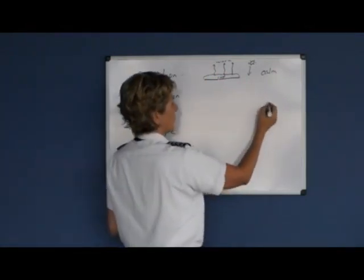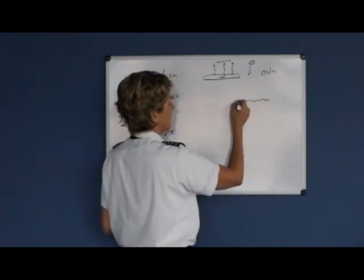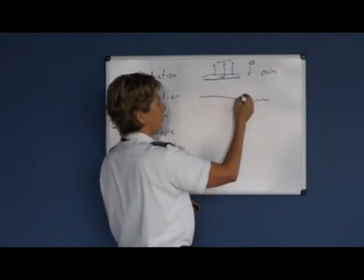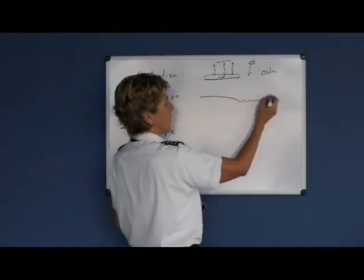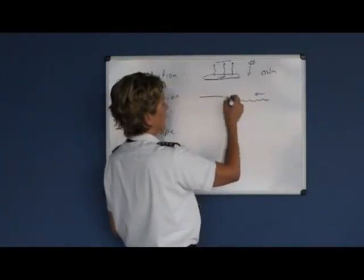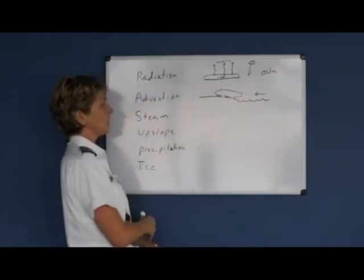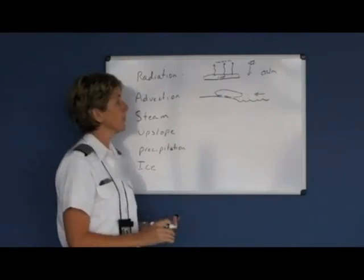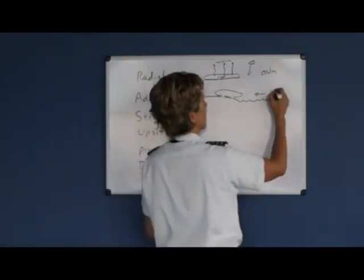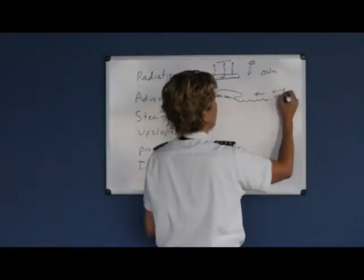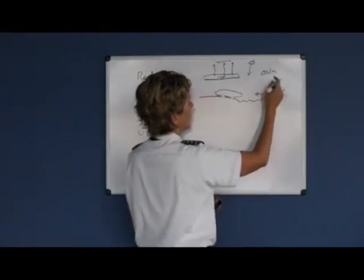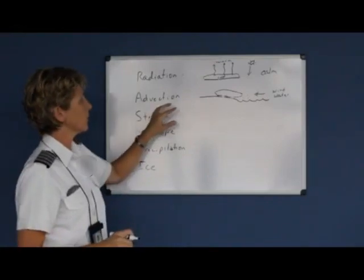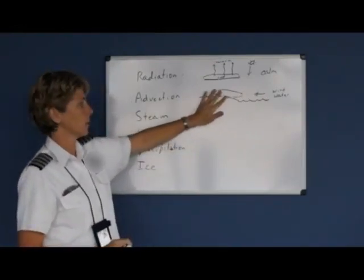Advection fog has to do with coastal areas. If this was water and you have the land, the fog actually formed over the water but wind blew that fog inland. So advection fog requires a water source — could be a lake, could be the ocean — and it also requires wind. If we had wind with radiation fog, the wind would just blow the fog away or disperse it. But with advection fog, the fog formed over the water and was blown inland.